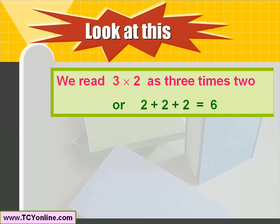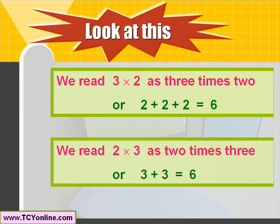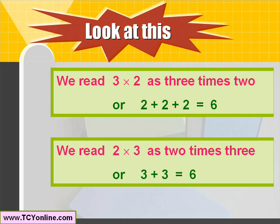Now, 3 × 2 can be read as 3 times 2, which means simply add the number 2 itself 3 times, giving a total of 6. And 2 × 3 can be read as 2 times 3, which means add the number 3 itself 2 times, which again gives a total of 6. So 2 times 3 is the same as 3 times 2.